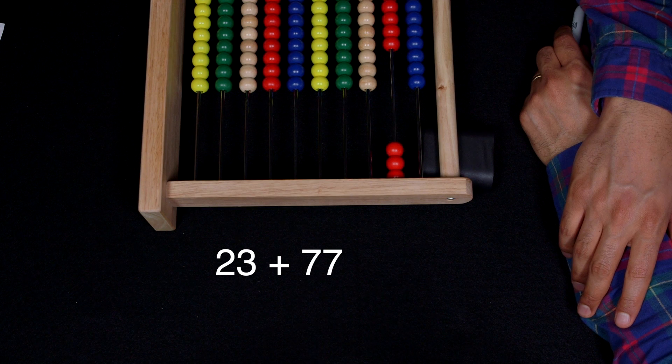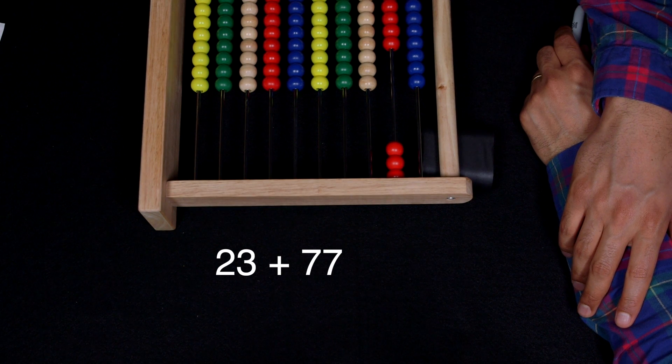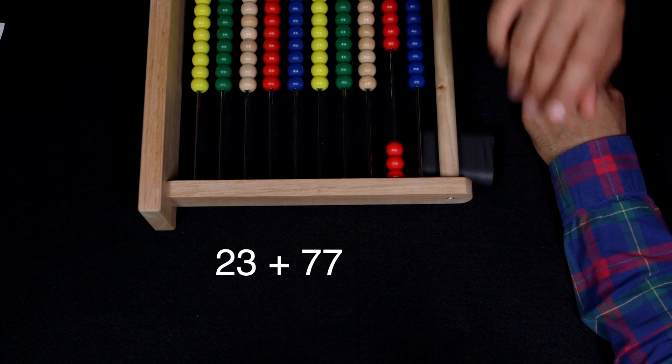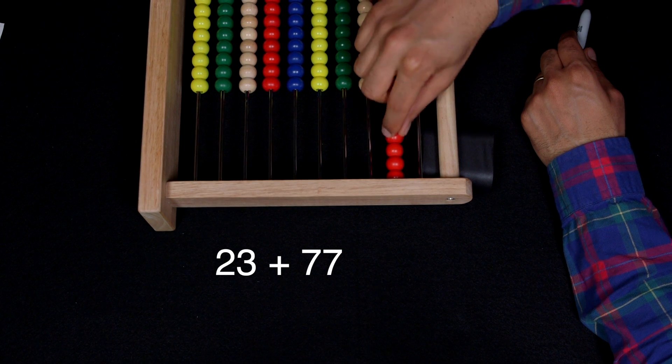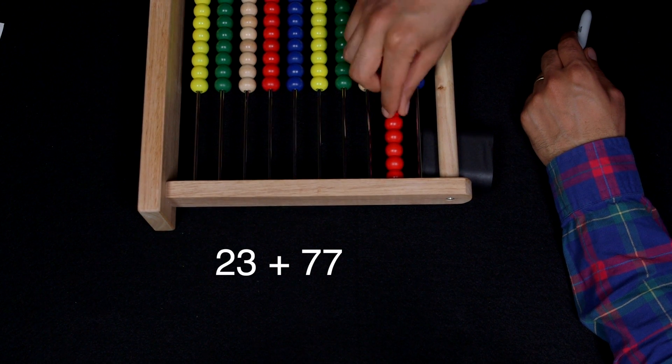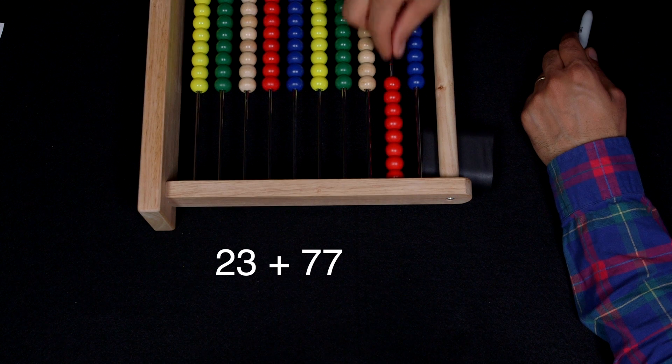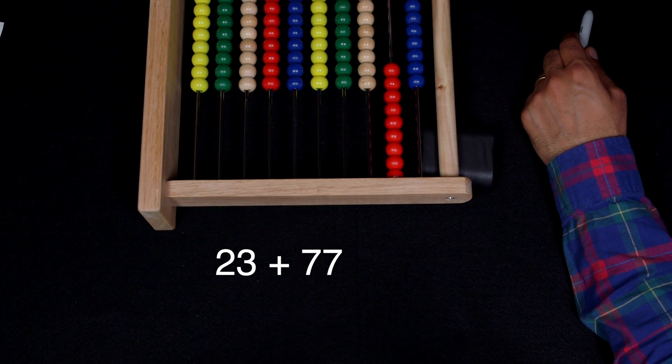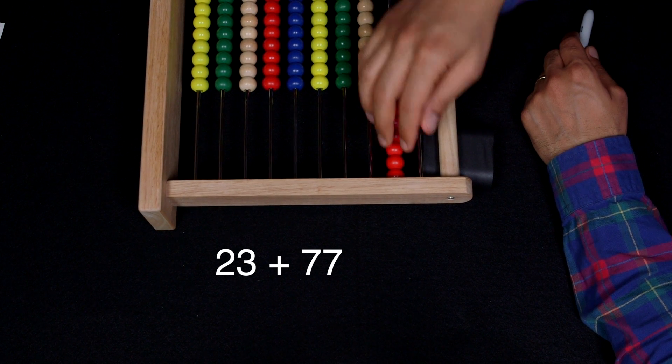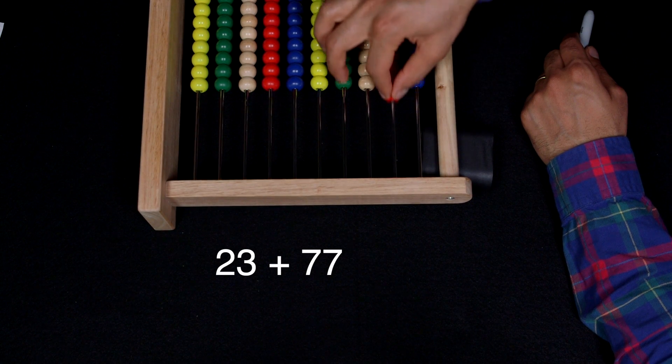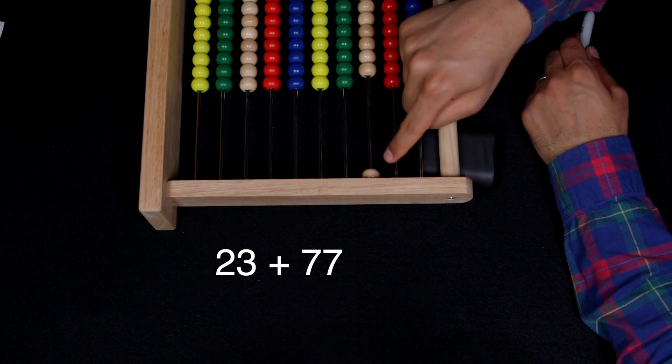And now I have to add 70 to this, because 77. I just added seven only. Now I have to add 70. So, let's add 10, 20, 30, 40, 50, 60, 70. And I could leave it like that. But even better, I can swap all of those in for one of these. So, that's 100.